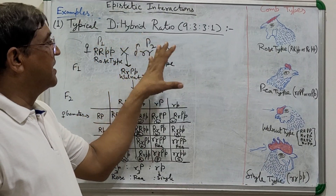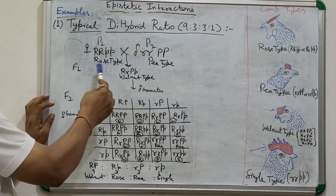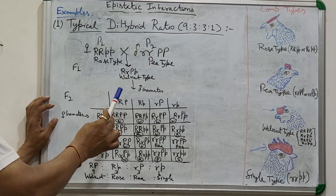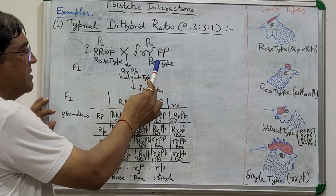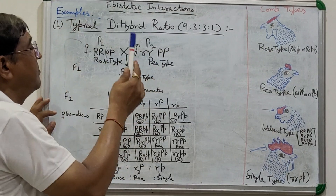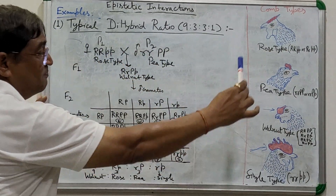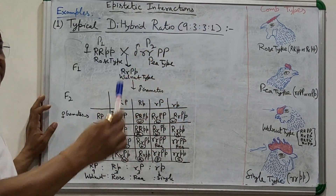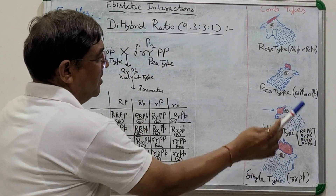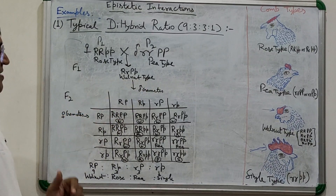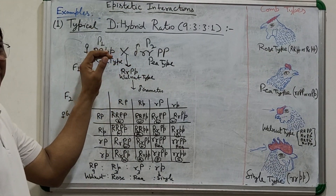Now, for the typical dihybrid ratio 9:3:3:1 — how do you get it? A hen with rose-type comb, genotype capital R capital R small p small p, is crossed with a cock having P-type comb, genotype small r small r capital P capital P. All the progeny — all the chicks — will have walnut-type comb. This tells us the genotypes of both parents, since all F1 offspring show walnut type.